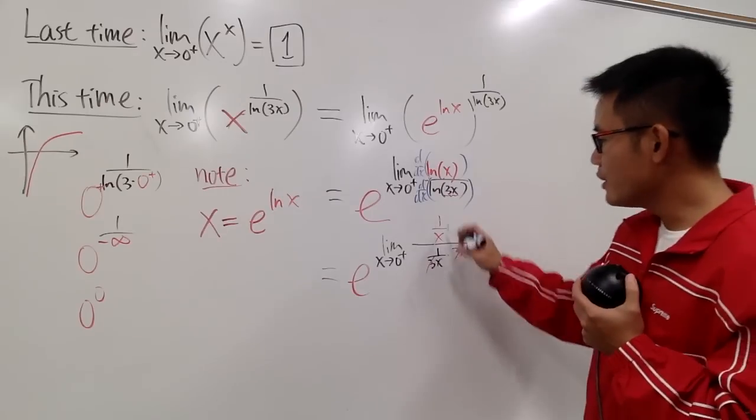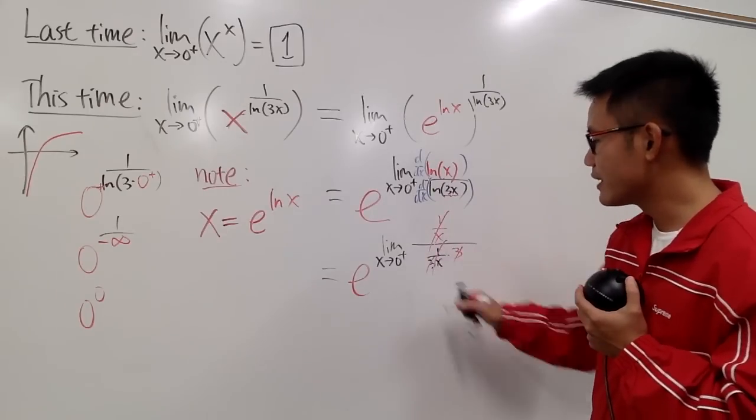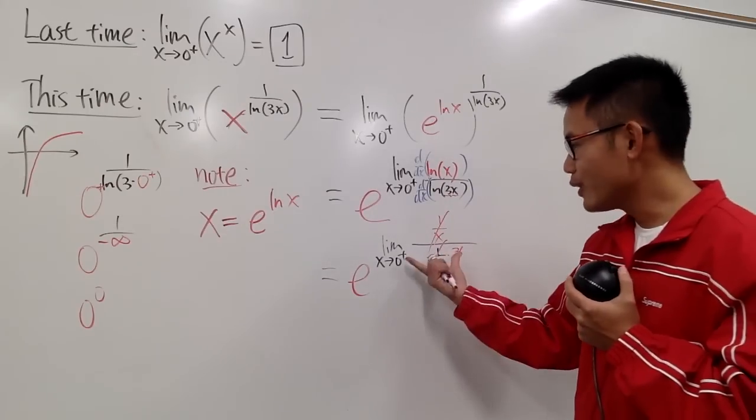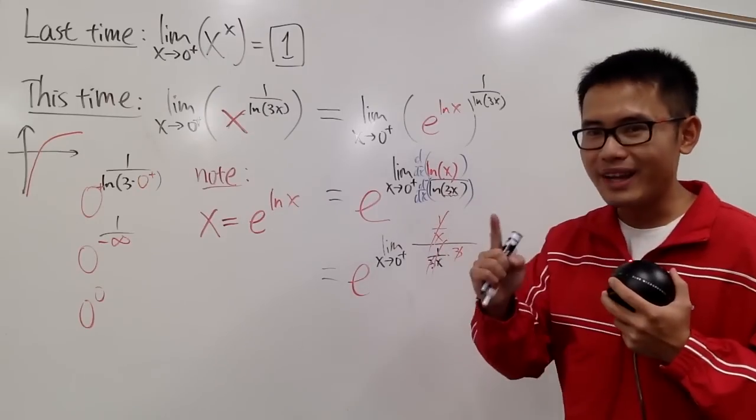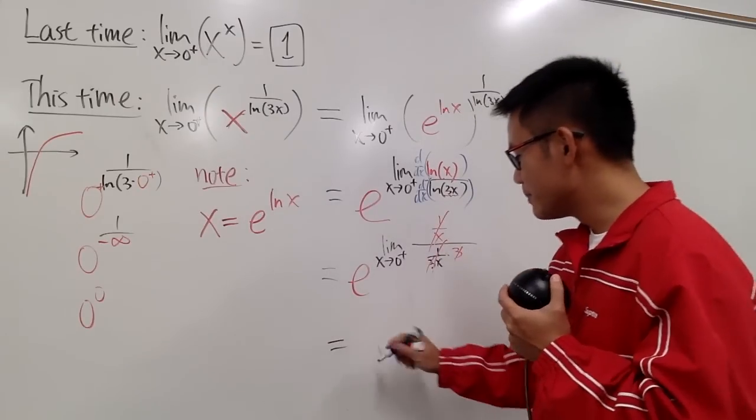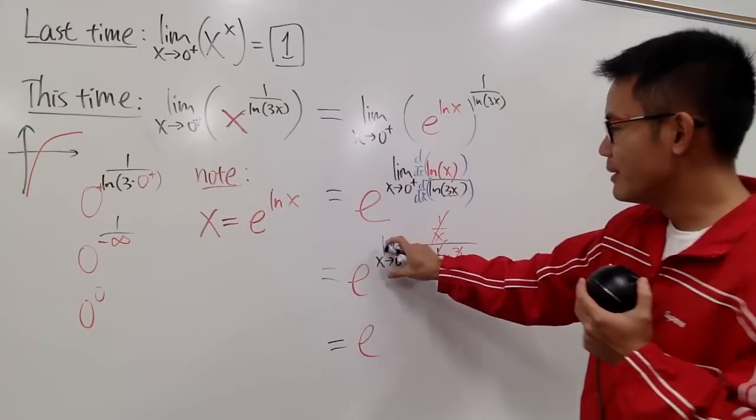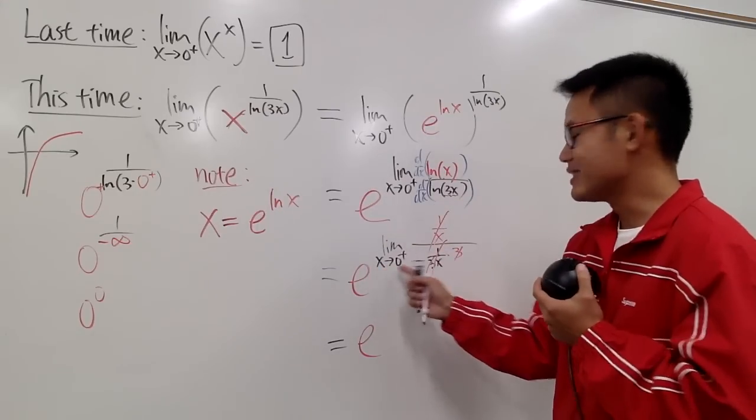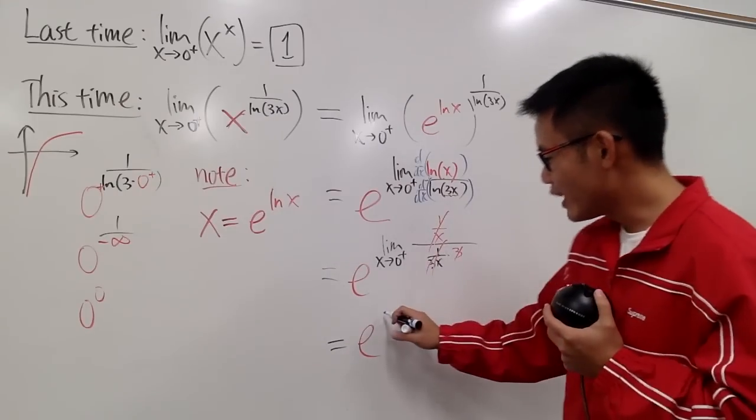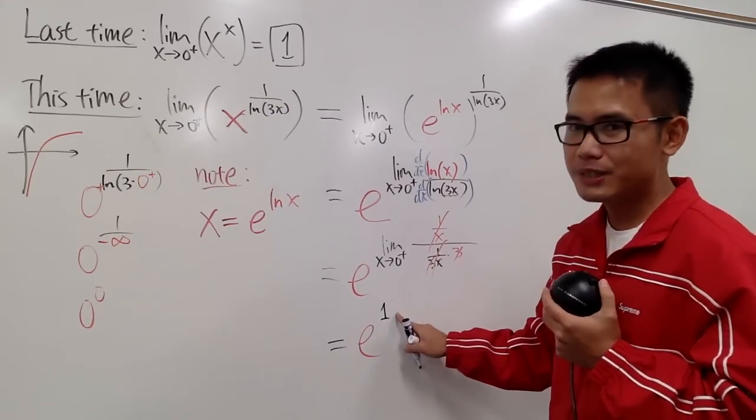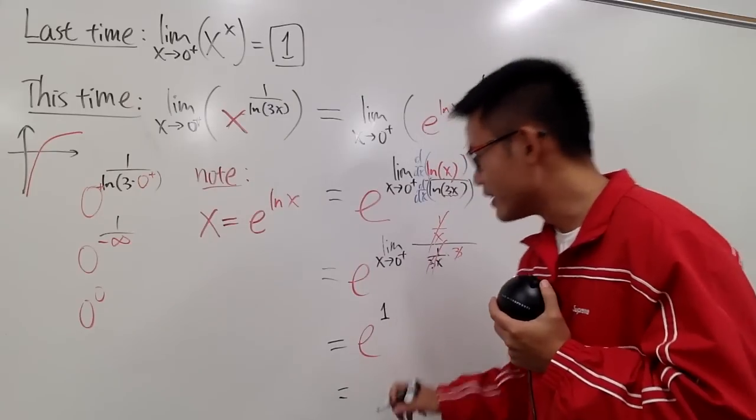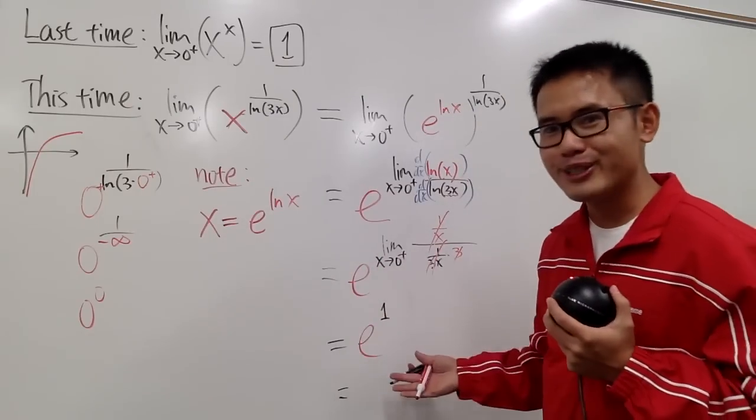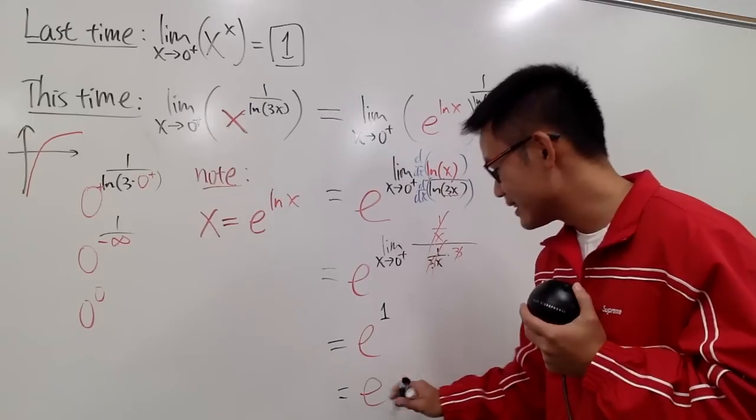Now what? Well, 1 over x, 1 over x, they cancel each other out. So all in all, this right here is just 1. In other words, we are talking about e to the limit of 1. The limit of 1, it doesn't matter what x is approaching to, it's always 1. So we are talking about e to the first power. In other words, this is nothing but that special number e that we like a lot.